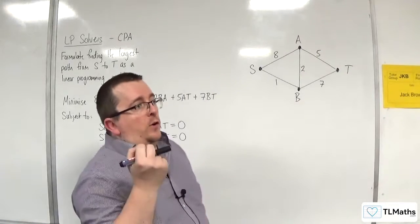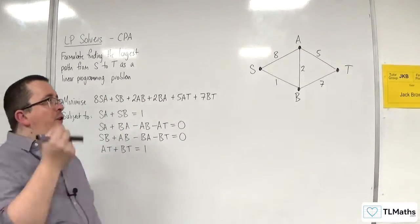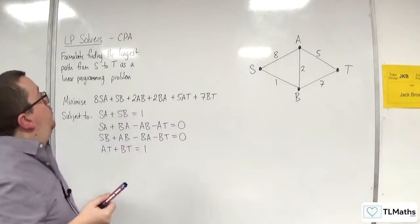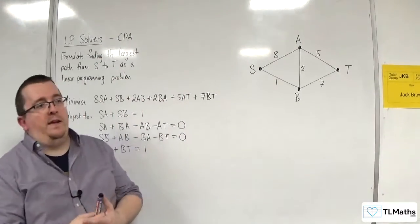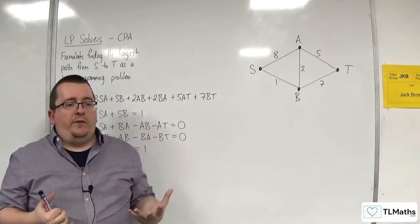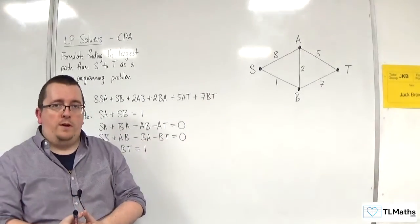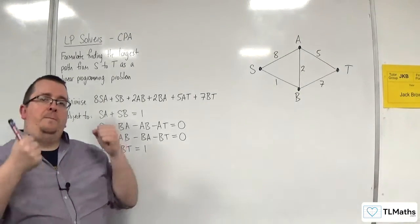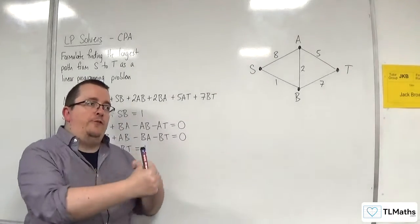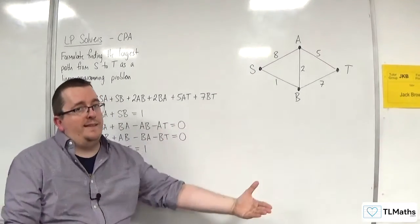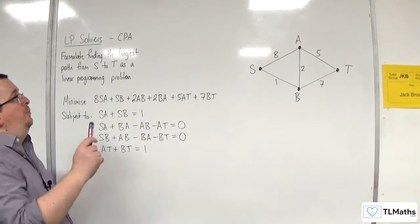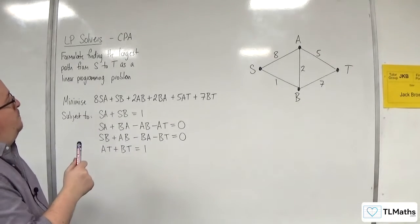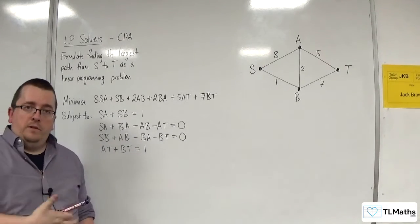In this video, I want to formulate a linear programming problem that will find the longest path from S to T. The reason I've put CPA — critical path analysis — up there is because when you're doing CPA and want to find the critical path through your network, that is essentially finding the longest path through the network, because you've got to allow for all the jobs to be completed before you can get to the end. So finding the longest path and CPA are synonymous. You can actually program an LP solver for CPA using the longest path.